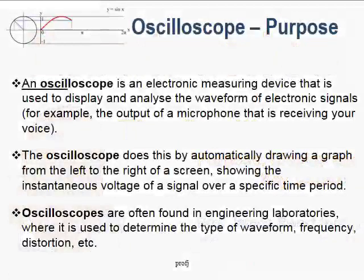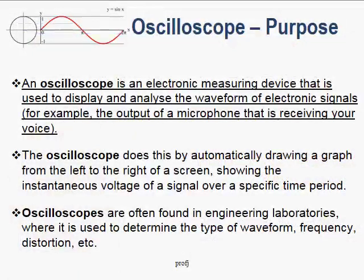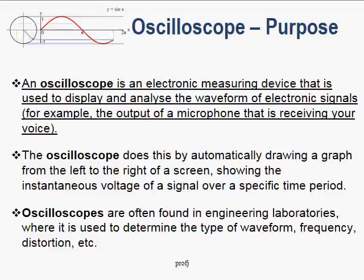An oscilloscope is an electronic measuring device that is used to display and analyze the waveform of electronic signals. We may want to see what your voice looks like, and so using a microphone we can connect it to an oscilloscope and see your voice as an electrical signal.